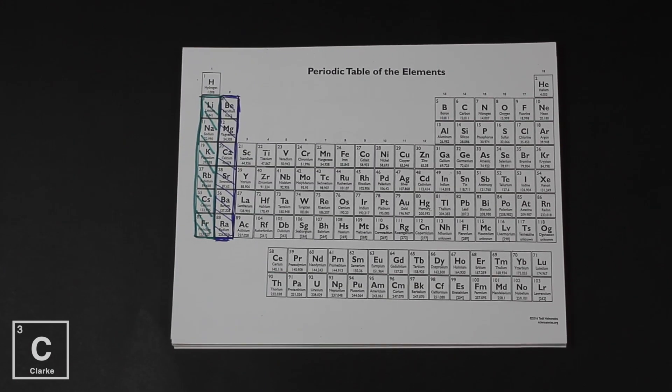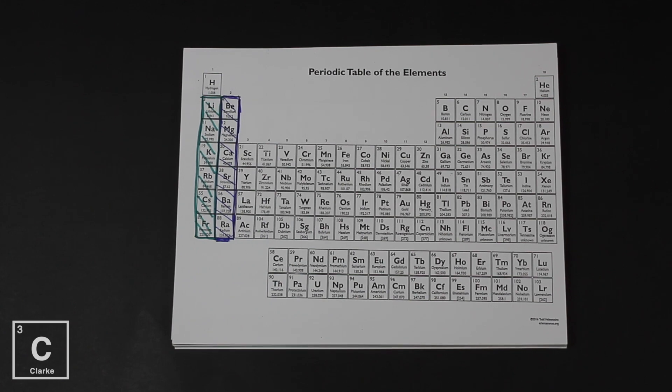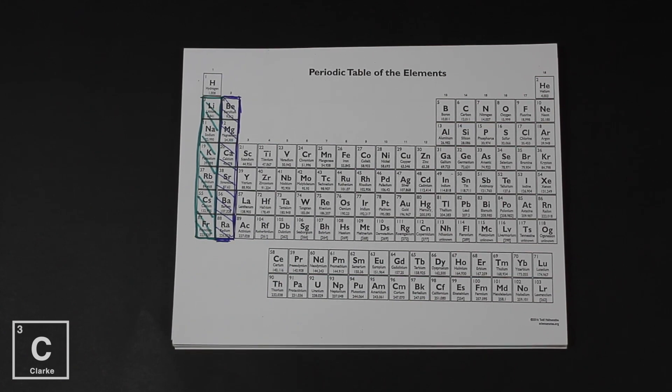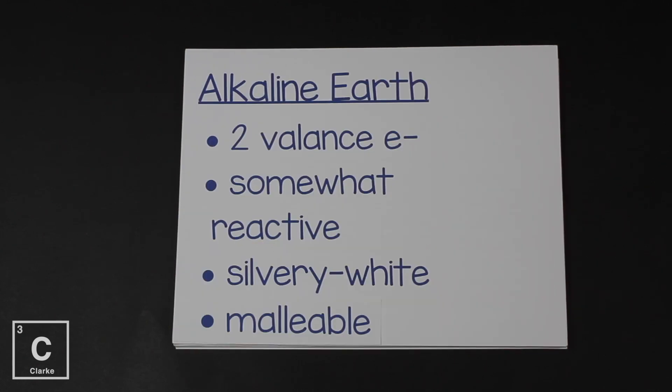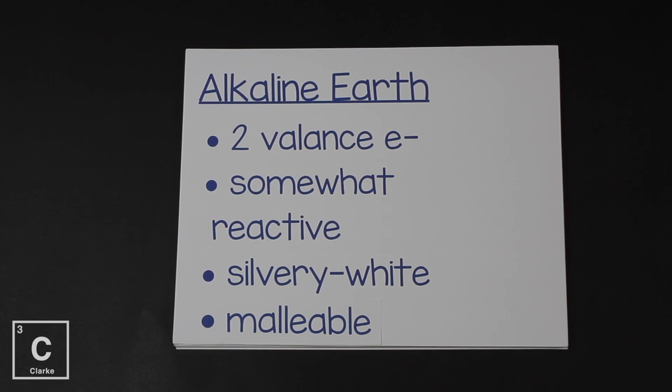The second group of the periodic table is called the alkaline earth metals. All of these metals are found in the earth. Did you realize calcium was a metal? The alkaline earth metals, since they're in group two, have two valence electrons. They're somewhat reactive compared to the alkali metals. They react to water, but not so violently - they definitely don't explode, but they're still pretty reactive. They're silvery white in color and also malleable.